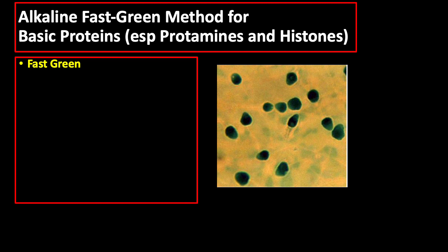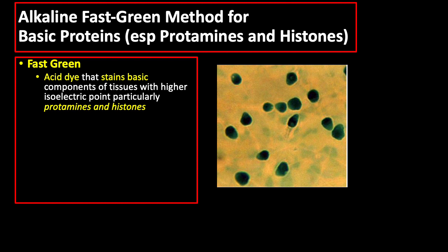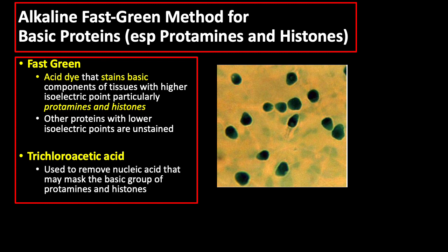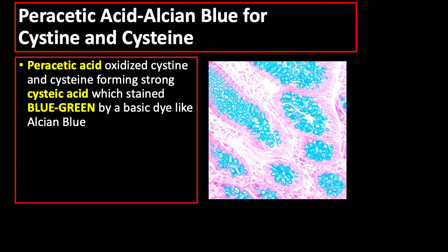The alkaline fast green method is used for basic proteins, especially protamines and histones. Fast green is an acid dye that stains basic groups in tissues, particularly basic protamines and histones which have higher isoelectric points than the pH of the staining solution. Trichloroacetic acid (TCA) is used to remove nucleic acid that may mask the basic groups of protamines and histones. Next is peracetic acid alcian blue for cystine and cysteine: peracetic acid oxidizes cystine and cysteine, forming strong cysteic acid which stains blue-green with alcian blue.